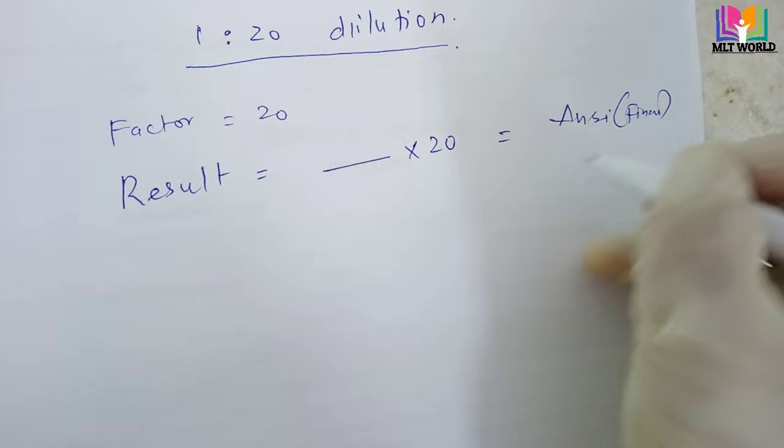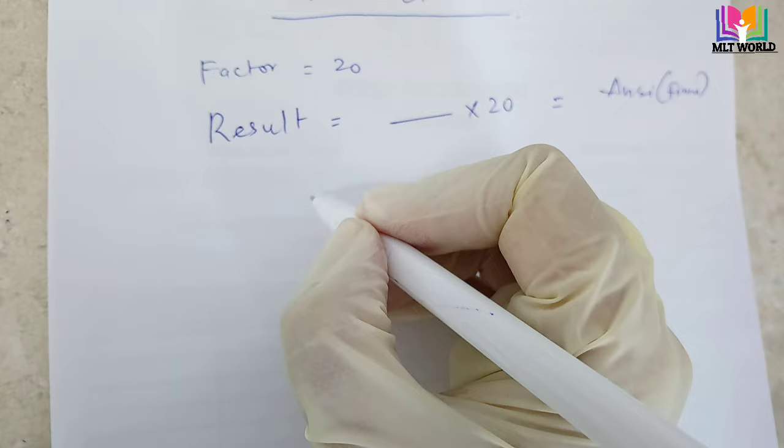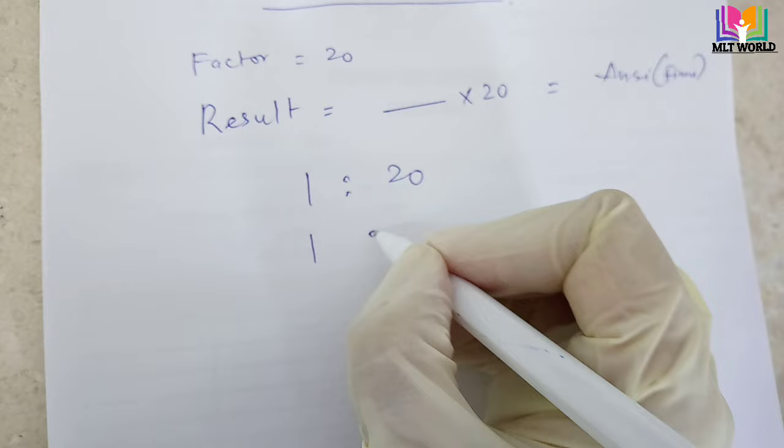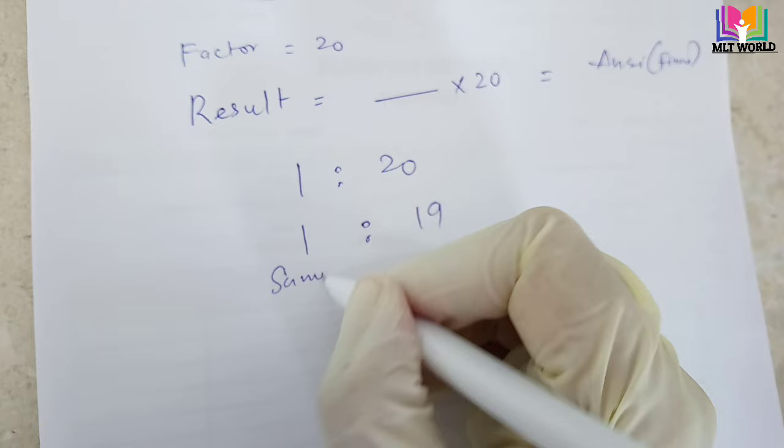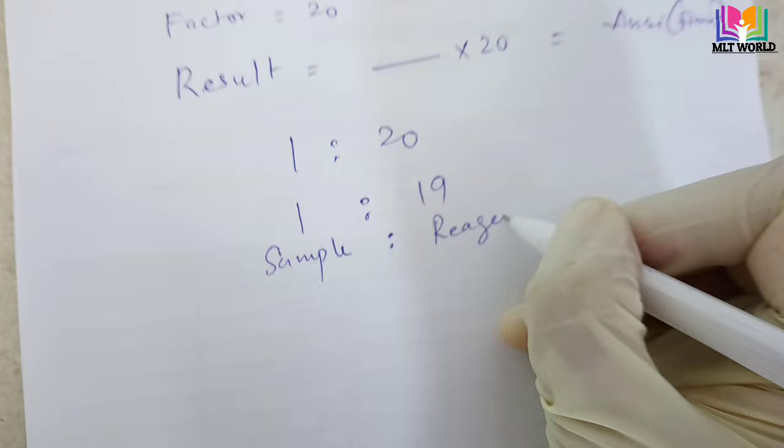I will show you how we will make this dilution with two methods, and then you will understand the concept and can use any method — even a different method also. So 1 is to 20 means one part of sample and 19 parts of reagent we need.